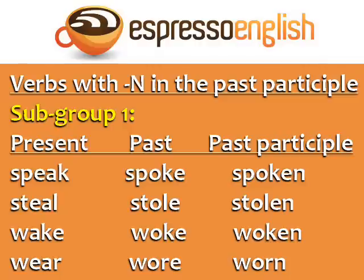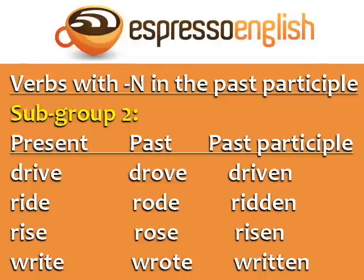Subgroup two has O in the past but not in the past participle. Drive, drove, driven. Ride, rode, ridden. Rise, rose, risen. Write, wrote, written. Notice that the sound of the I changes from the present to the past participle. The present is 'drive,' and the past participle is not 'drive-en' but 'driven.'